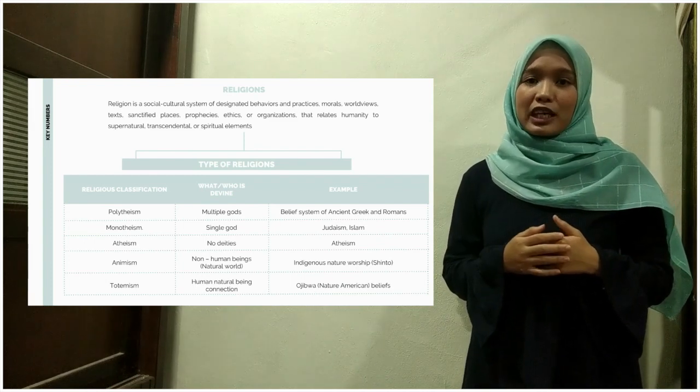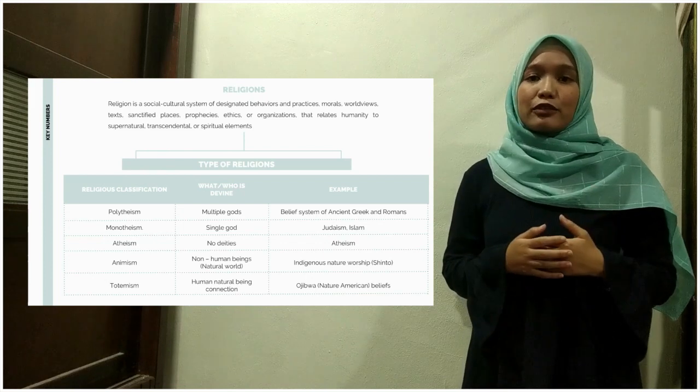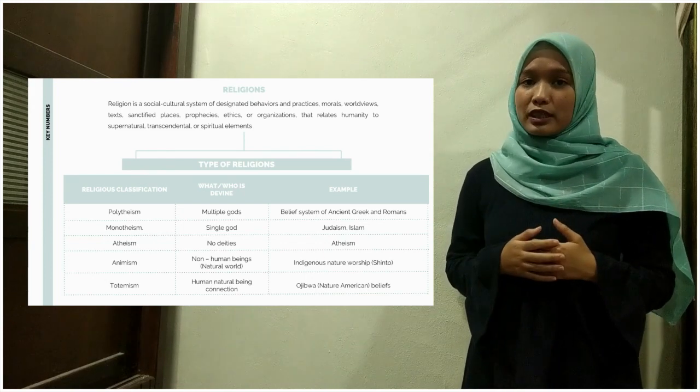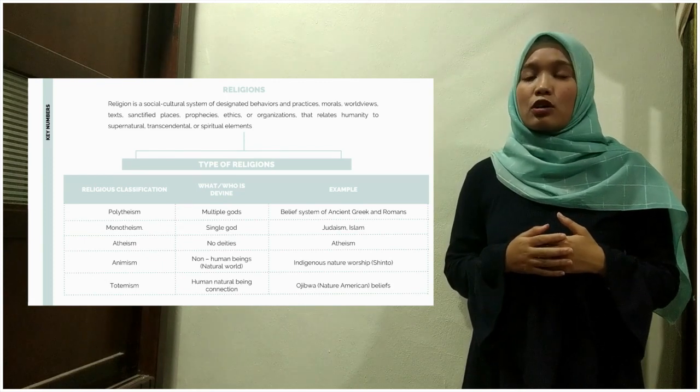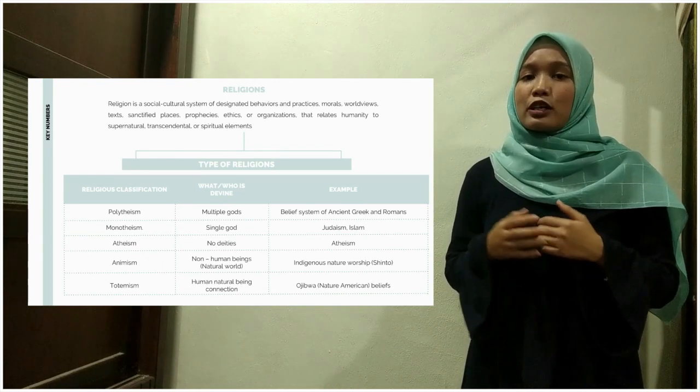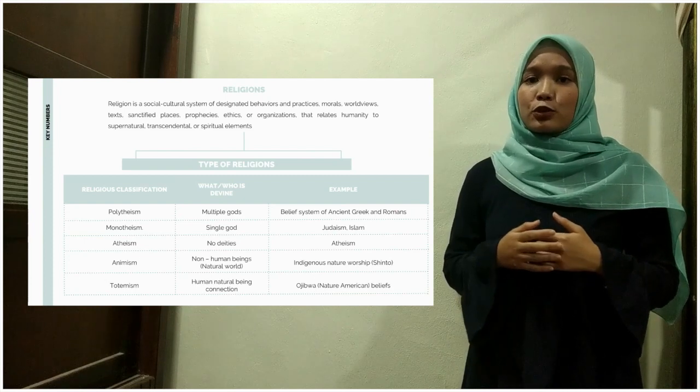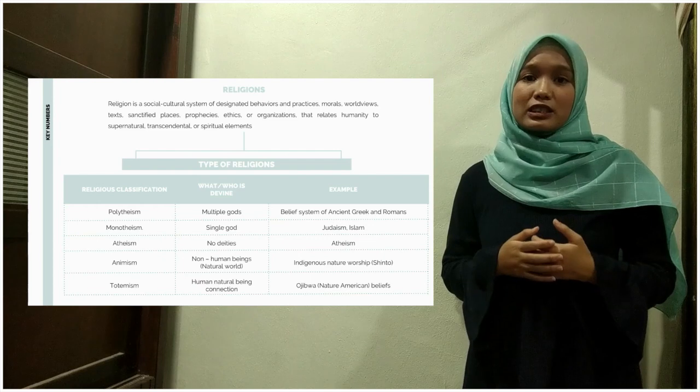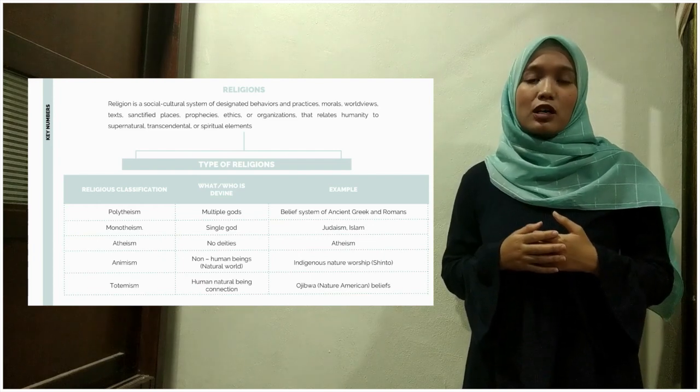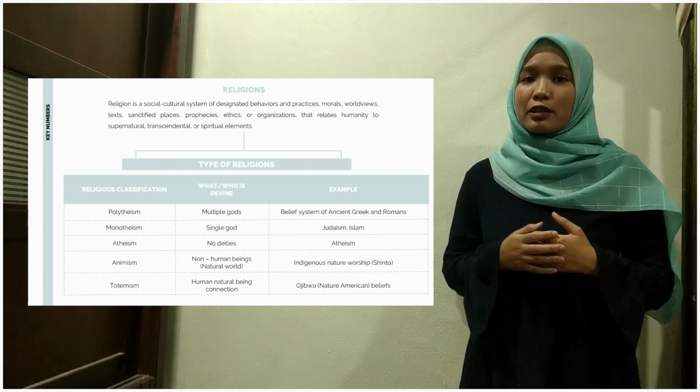Next is Animism, in which they believe their god is a non-human being or natural world, for example, indigenous native worship or known as Shinto. Lastly is Totemism, where they believe that humans and nature being have connections, which is Ojibwa or Native American belief.